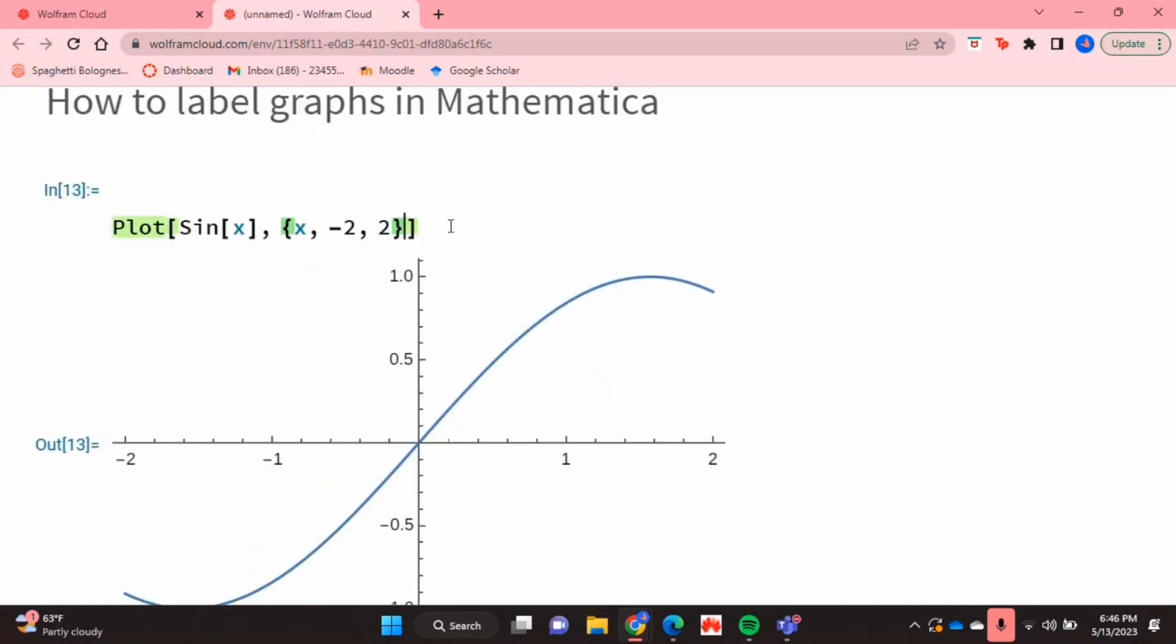And now to give this plot a label, inside the plot function you're going to put a comma and you're going to type PlotLabel, and you're going to create an arrow.